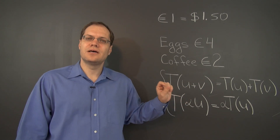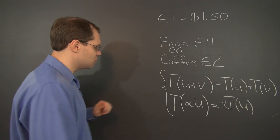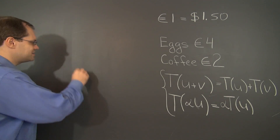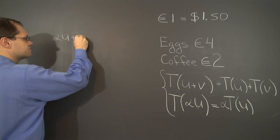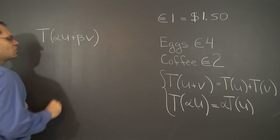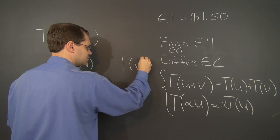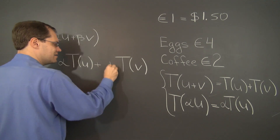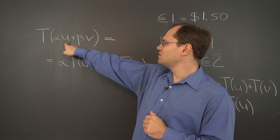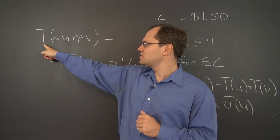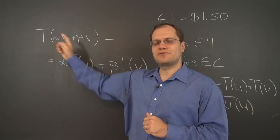The nice thing about these two definitions is that they can be combined into a single definition. And for that, you need the concept of linear combinations. So it doesn't matter whether you evaluate the linear combination first and then apply the transformation, or whether you apply the transformation to the individual elements and then combine them in the same linear combination. This equal sign means that the order of these two things doesn't matter. If you form the linear combination first and then transform, versus transforming the individual vectors and then combining them in the exact same linear combination — if you have equality, then the transformation is linear.